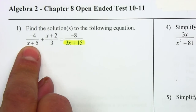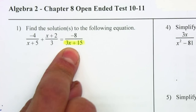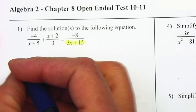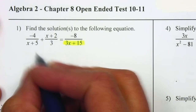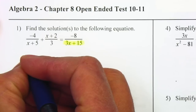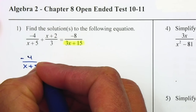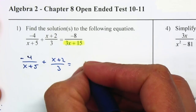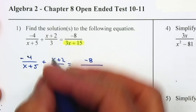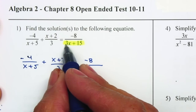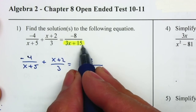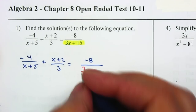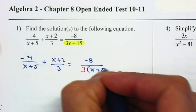x + 5 cannot be factored, 3 cannot be factored, but we can factor 3x + 15. So I rewrite it: I have -4/(x + 5) plus the same term, equal to -8 over... and I'm going to factor 3x + 15. What can I factor out? 3 divides both 3 and 15, but they don't all have an x, so I take out a 3, giving me 3(x + 5).